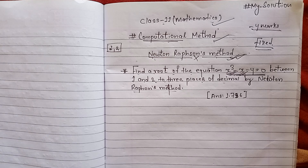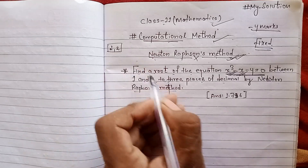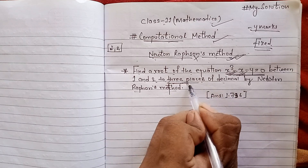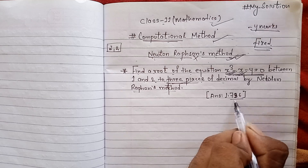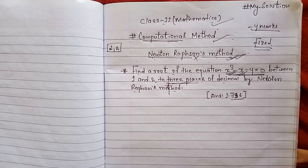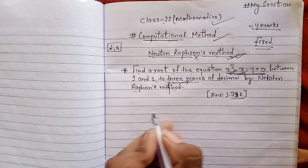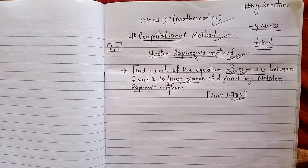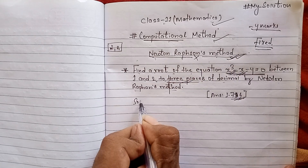The other thing is to find the answer as a decimal. If you have a decimal, you can see the decimal value. The answer is correct. If you have a solution, you can use the solution.